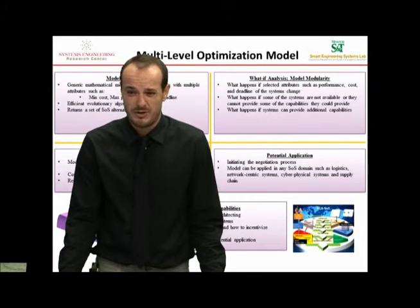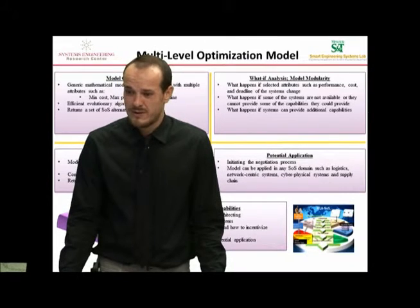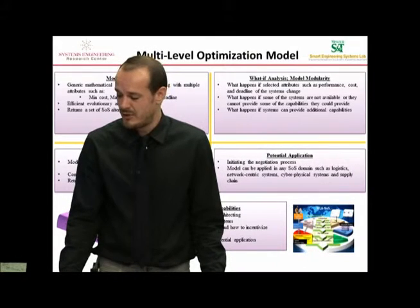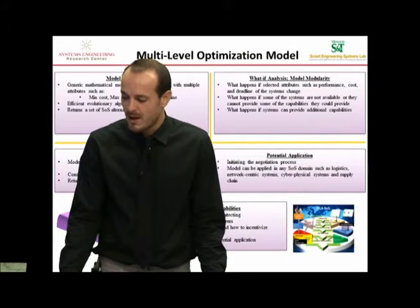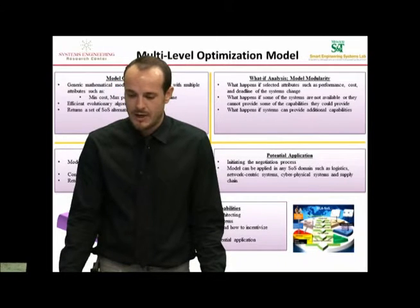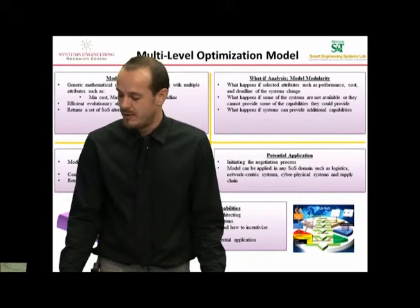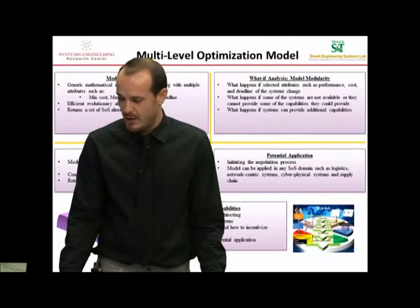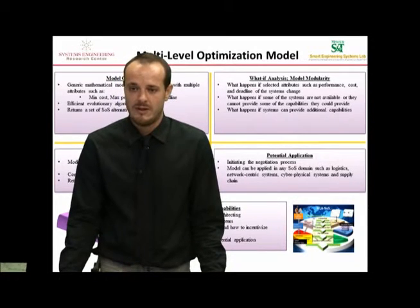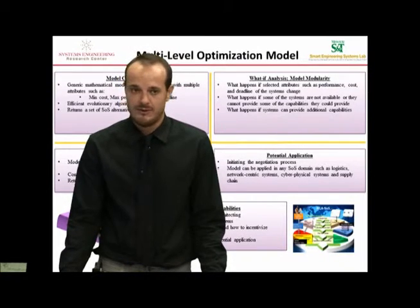We can model the competition among the systems, where systems can be competing to be included in the architecture. We can also model the flexibility of systems and incorporate methods to incentivize systems to become flexible — that's what we are doing in the second version of this project. The nice thing about this model is that it can be modified for different settings easily, and the solution approach can also be modified easily to capture different practical settings.